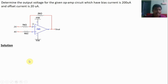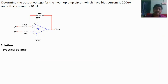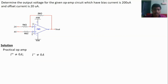Let us take the current flowing through the minus terminal as I minus and the plus terminal as I plus. The difference between the ideal case and practical case: in the ideal case, I minus equals I plus equals zero, but in the practical case, I minus is not equal to zero and I plus is not equal to zero.